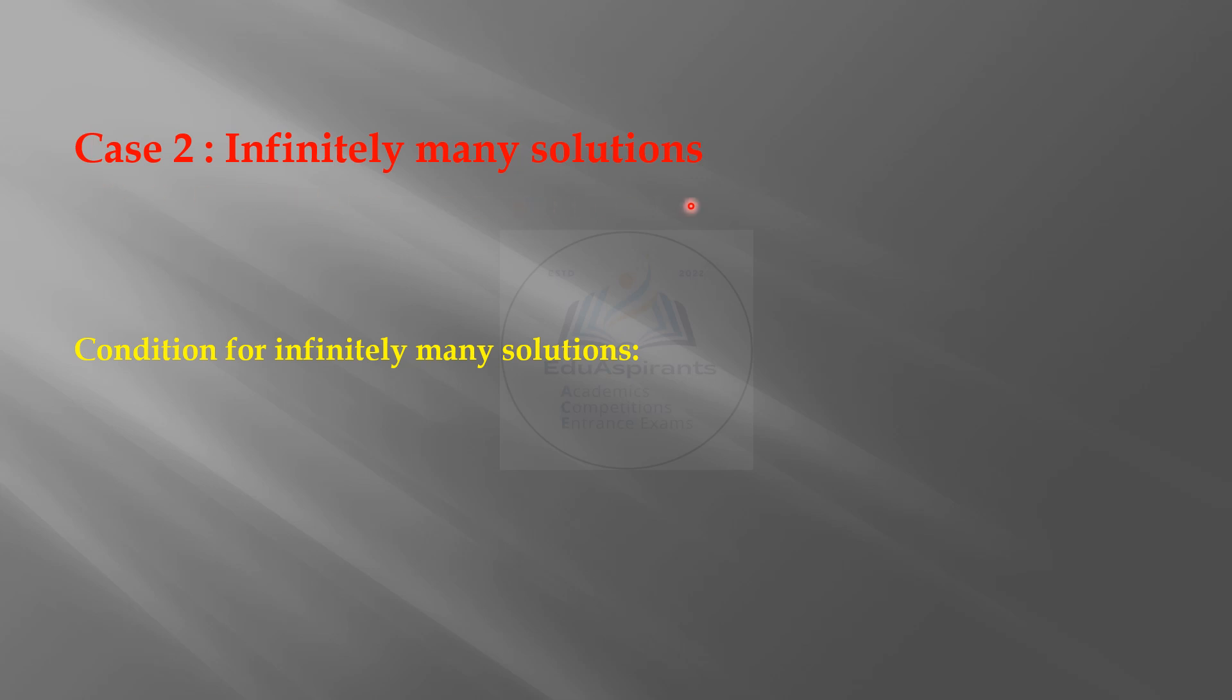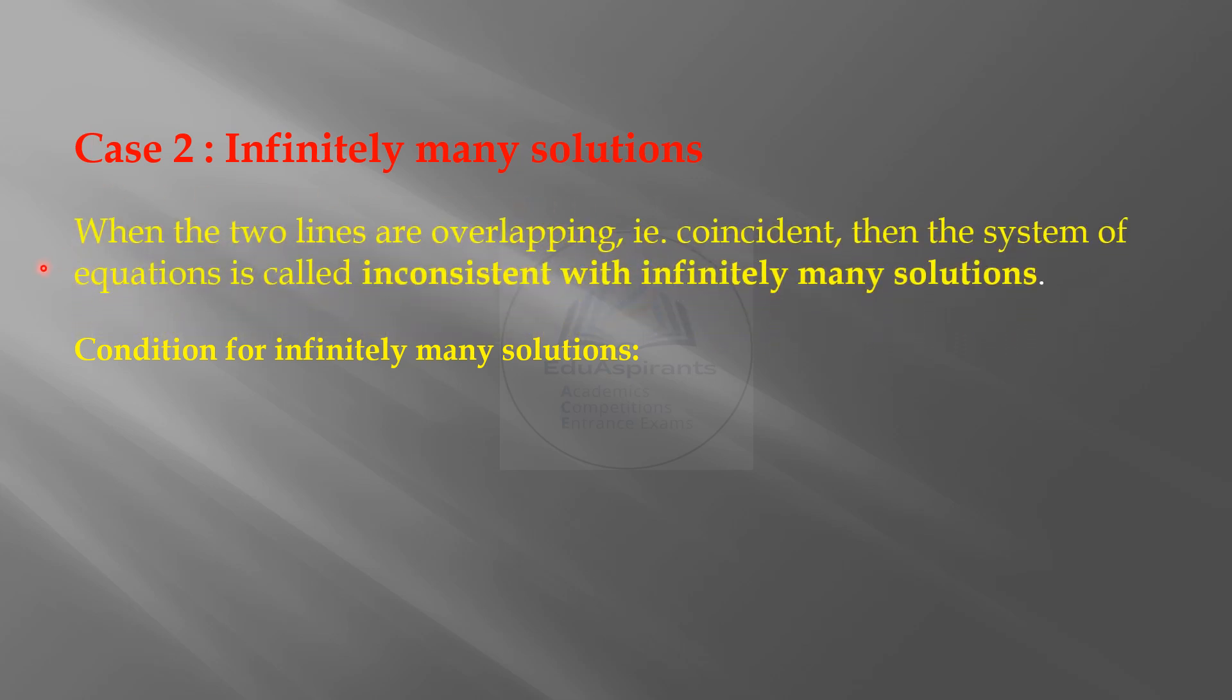Case 2: Infinitely many solutions. When the two lines are overlapping, that is coincident, then the system of equations is called consistent with infinitely many solutions. Condition for infinitely many solutions: a1 upon a2 is equal to b1 upon b2 is equal to c1 upon c2.